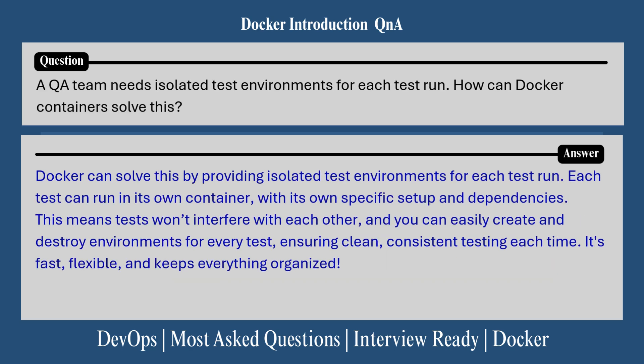Last interview question on Docker basics: a QA team needs isolated test environments for each test run. How can Docker containers solve this? Here's how you can answer: Docker can solve this by providing isolated test environments for each test run. Each test can run in its own container with its own specific setup and dependencies. This means tests won't interfere with each other and you can easily create and destroy environments for each test, ensuring clean, consistent testing each time. It's fast, flexible and keeps everything organized.